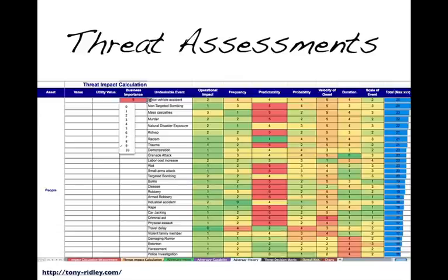You'll see a number of undesirable events identified here. This was a non-strategic assessment — very tactile and focused on a single project in a single area. Strategic assessments should cover the major things likely to cause disruptions, whereas this one goes down to a more descriptive process of undesirable events, mapping out where priorities should be focused. It's a job hazard identification and process identification with quite a broad area. The operational impacts, frequency, predictability, probability, velocity of onset, duration, and scale of event are all captured — and you can add to these particular processes.